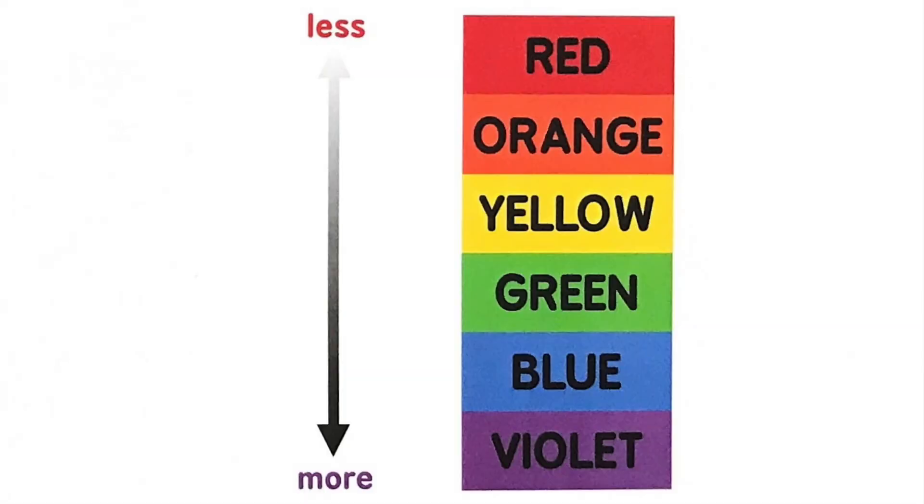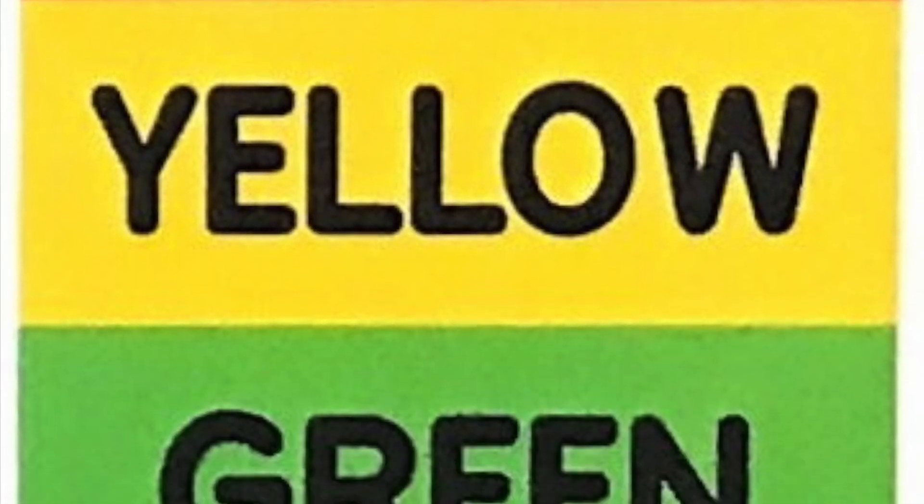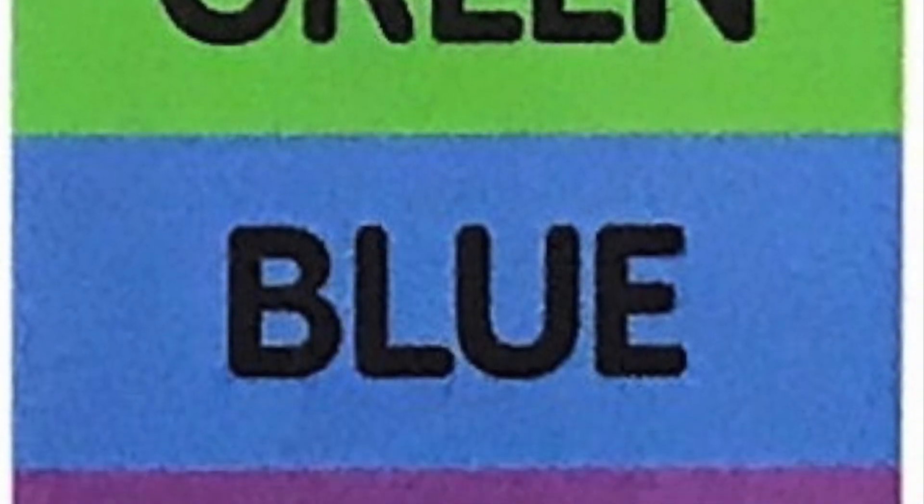Rainbow colors always appear in the order of least refracted to most refracted light: red, orange, yellow, green, blue, violet.